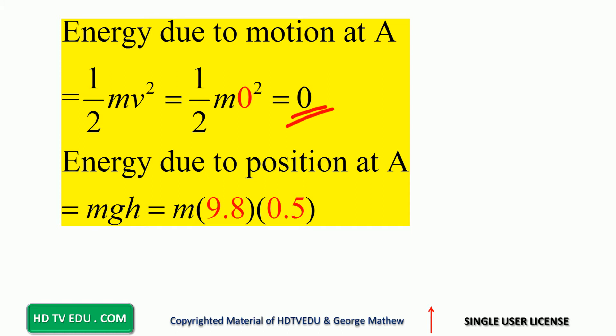Energy due to position at point A is MGH, where H is from the zero level. Do not forget, H can be positive, zero, or negative. For our case, it is positive. Mass is in kg. M is the mass in kg. G is acceleration due to gravity in meters per second per second, and H is the height in meters.